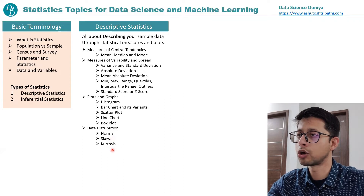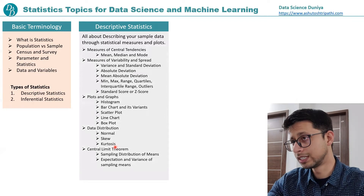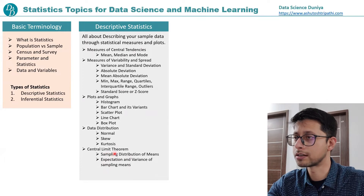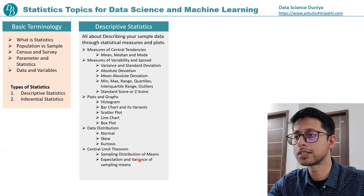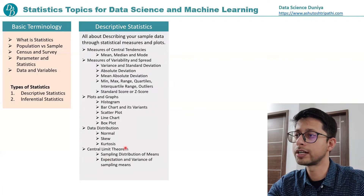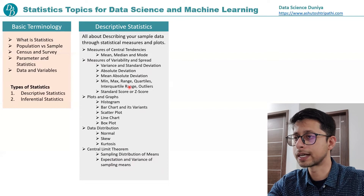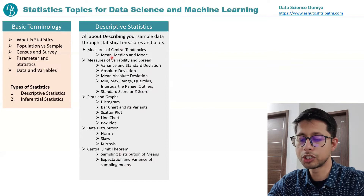Then it comes to data distribution — for example, how your data is distributed: is it normally distributed, is it skewed, or is there any kurtosis? Last but not least under descriptive statistics is the central limit theorem. It gives you the idea of, when we have different samples available with a mean associated with each sample, the sampling distribution of those means. We also cover expectation and variance of the sampling mean.